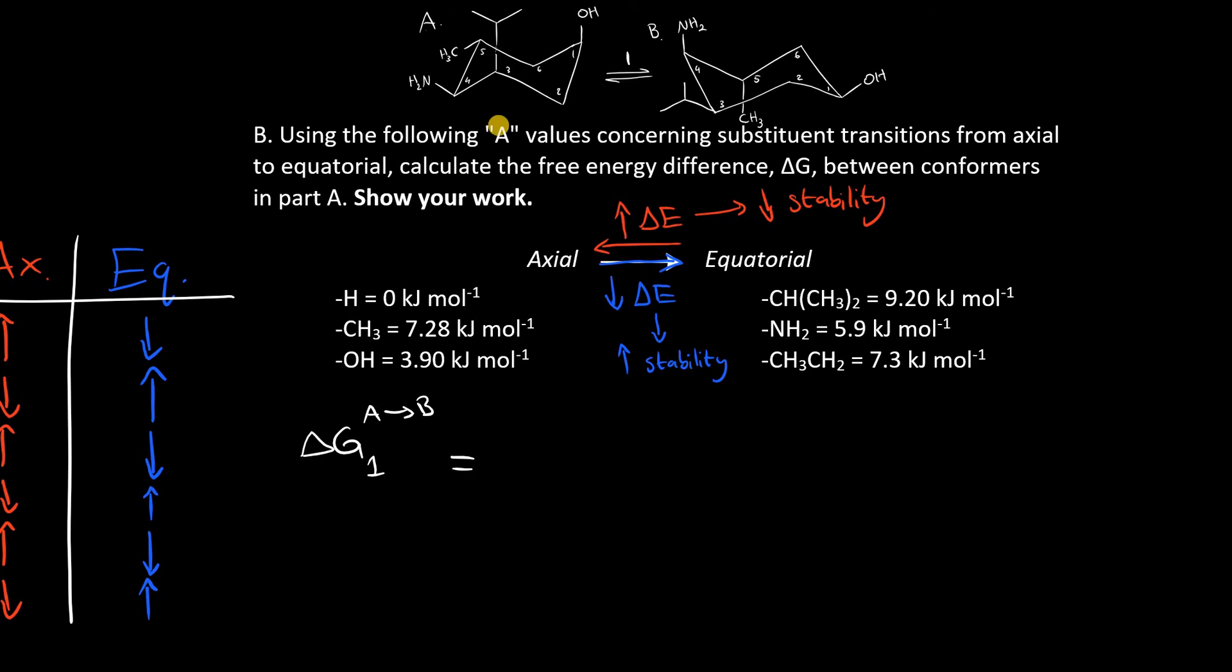So having said that, we can calculate A to B delta G one. So we observe the structure here and let's start with the OH group. So the OH group here is axial up and after a chair flip, it's equatorial up. So going from axial to equatorial is a release of energy, so we assign a negative sign and use this delta G value. We know that the axial isopropyl group has very high energy, 9.2 kilojoules per mole. But when we move it to equatorial, that much is released, so we assign a negative sign.